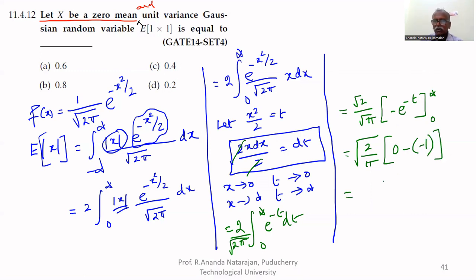That evaluates to 1. Therefore, the result is square root of 2 divided by pi, which equals approximately 0.797, or approximately 0.8.